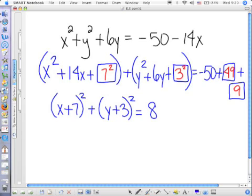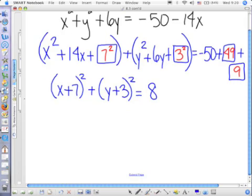Is this the equation you got? Okay. Which means that the center is at negative 7, negative 3, and the radius is equal to 2 square roots of 2.